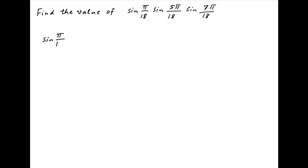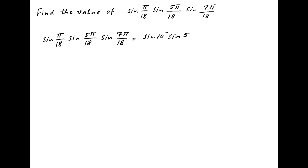The given expression is equal to sine of pi upon 18 times sine of 5 pi upon 18 times sine of 7 pi upon 18. Since pi is equal to 180 degrees, this can be written as sine of 10 degrees times sine of 50 degrees times sine of 70 degrees.